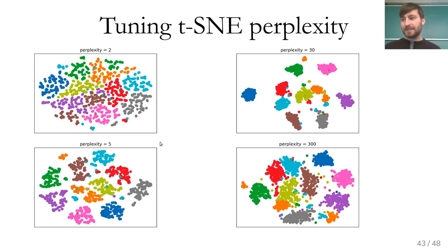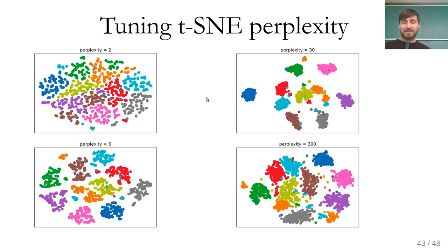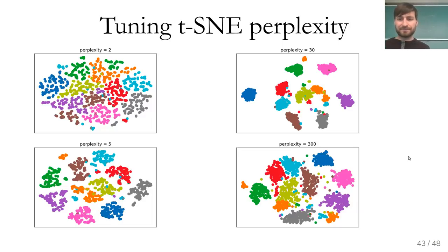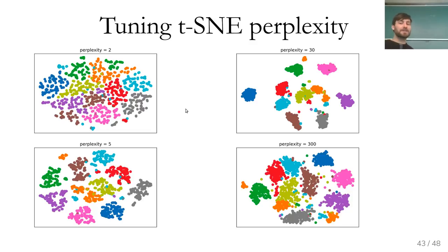t-SNE has one important parameter called perplexity, which controls how close you want the groups to be or how far away is 'far away.' The author says 30 always works — the default is 30, which usually works well. Here you can see results with perplexity equal to 2, 5, 30, and 300. On a two-moons dataset, perplexity 30 works pretty nicely, while going lower completely destroys the structure. On small datasets smaller values work better; on large datasets larger values work better.